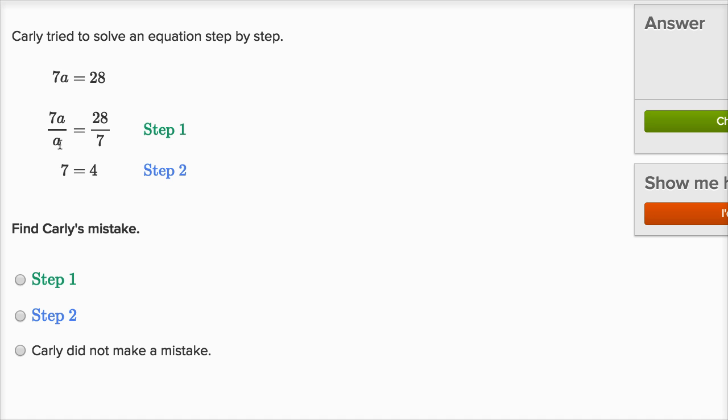Then on the left-hand side, she divides it by a. And on the right-hand side, she divides by seven. Well, this seems strange. When you're manipulating the equation, whatever you do to one side, you have to do to the other side. If she decides to divide the left side by a, on the right side she should divide by a as well. Or if she wants to divide the right side by seven, she should divide the left side by seven as well. But she's dividing both sides by two different things. So step one is where she makes the mistake.